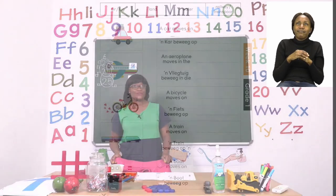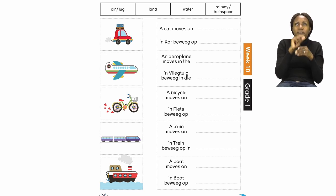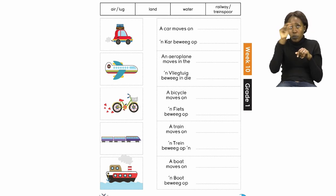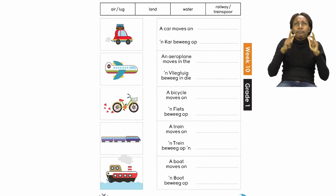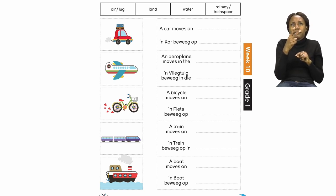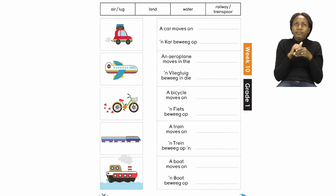On page 25 we are going to start with our transport. We have some sentences here that need to be matched with the pictures. Let's take a look: we have a car, an aeroplane, a bicycle, a train, and a boat. It is going to be our job to look for the actual words that complete the sentences. We know that all of these things are transport, but where do they move?